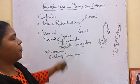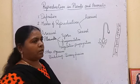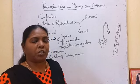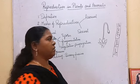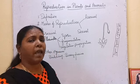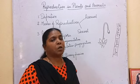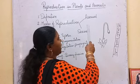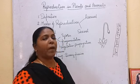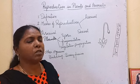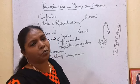What are the modes of reproduction? Reproduction takes place in two ways: asexual and sexual. Asexual reproduction and sexual reproduction are the two types. The main difference is that in asexual reproduction, gametes are not involved, whereas in sexual reproduction, gametes are produced. Also, in asexual reproduction only one parent is involved, while in sexual reproduction two individuals are involved.